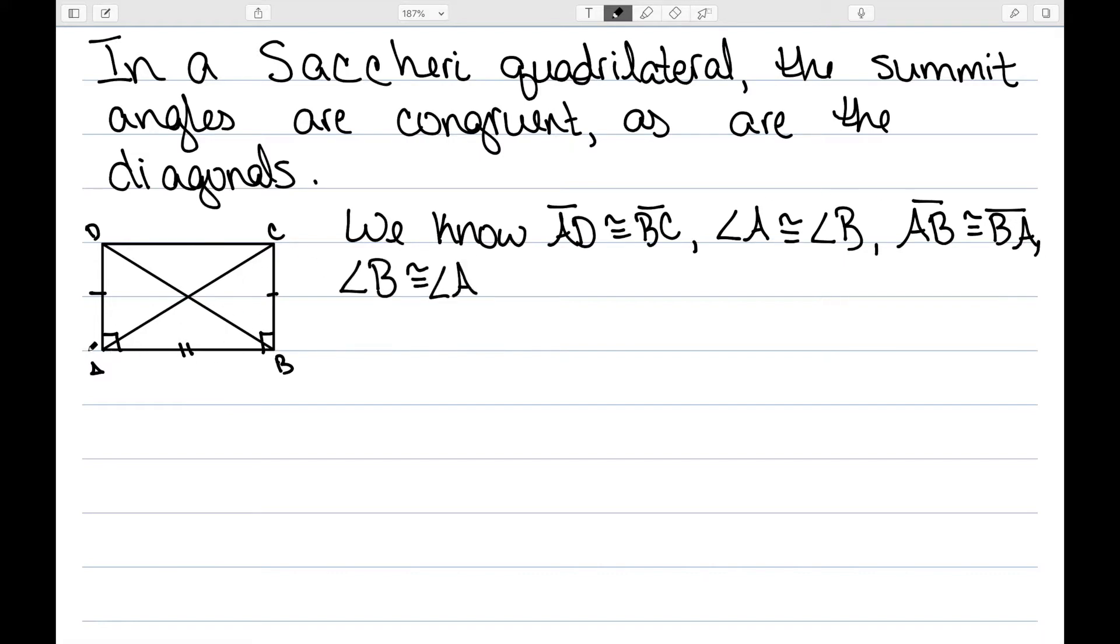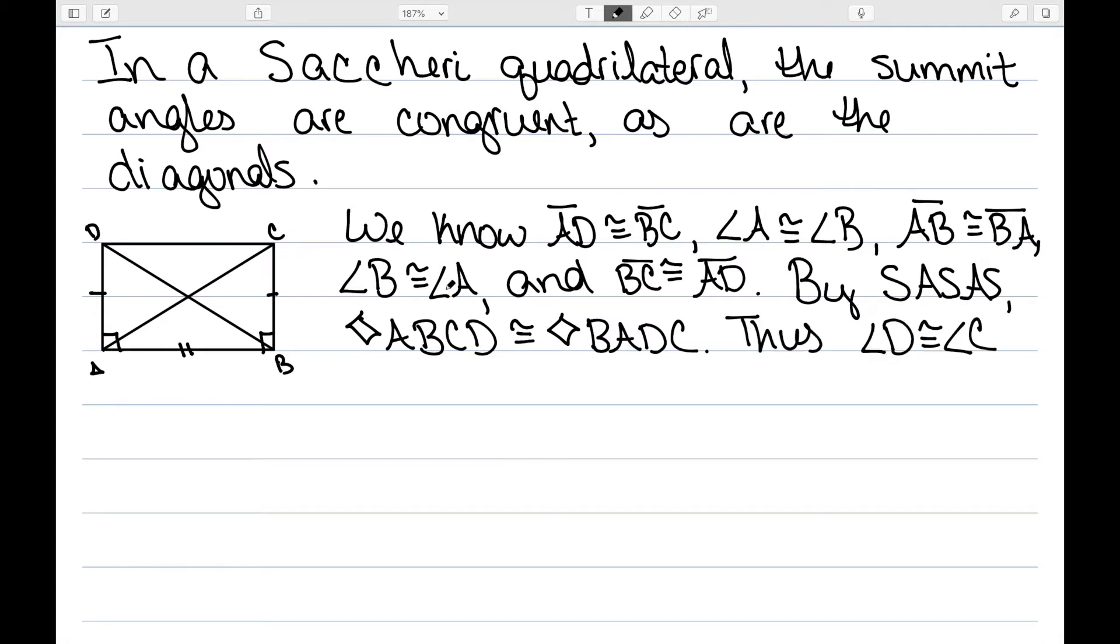We have that side AB is the same as side BA by symmetry. Angle B is congruent to angle A. These are both right angles. And finally, BC and AD are the same. So by side angle side angle side, we have that this quadrilateral ABCD is congruent to BADC. And that gives us that these angles here have to be congruent, so angle D is congruent to angle C. So this gives me that the summit angles are congruent. Now let's look at the diagonals.